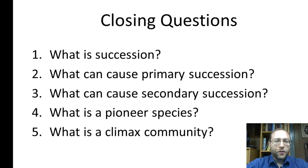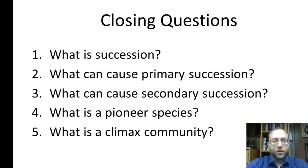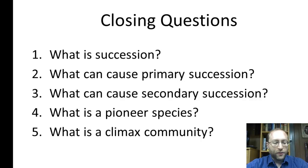Here are the closing questions. Number one: what is succession? Two: what can cause primary succession? Three: what can cause secondary succession? Four: what is a pioneer species? And five: what is the climax community? That concludes this podcast — look forward to seeing you tomorrow with your answers to these five questions.